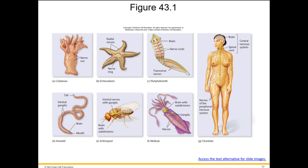You can see a comparison of different nervous systems in the diagram: the nerve net in cnidarians like sea anemones, the nerve ring and radial nerves in the sea star, the planaria with its two nerve cords and small brain with subdivisions, the annelids with segmented ganglia, arthropods with ventral nerves and ganglia, molluscs with a brain with subdivisions, and finally the chordates with a full central and peripheral nervous system.